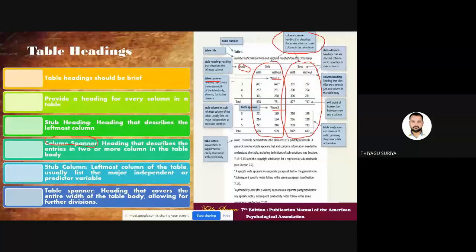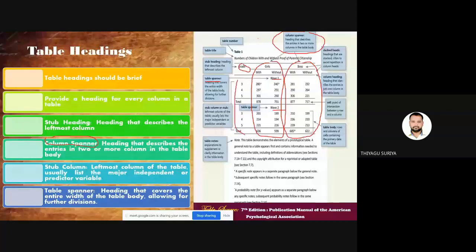The table spanner divides the table into two headings or two ways. Now the table body component — what are the rules while making a table body? Table bodies may be in the form of numbers or words. It's not compulsory for all table body entries to be numbers only. The body including table head may be single space, one and a half space, or double space. Based on flexibility and the researcher's need, they may go with one or two spaces.